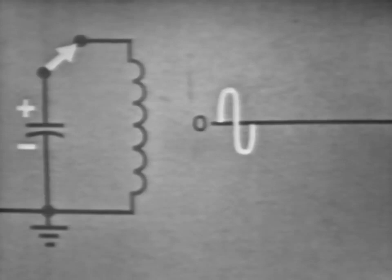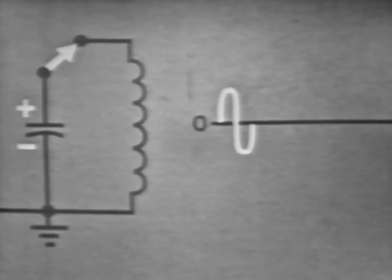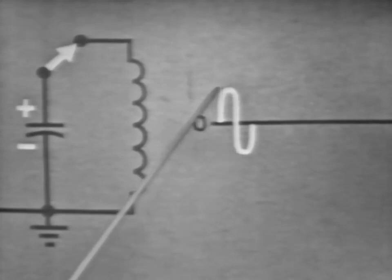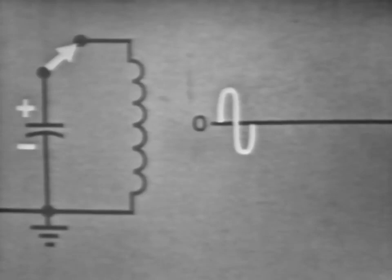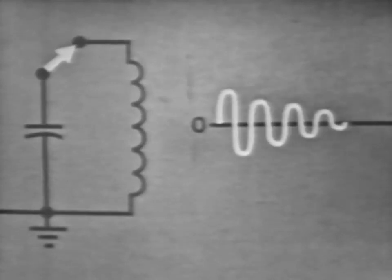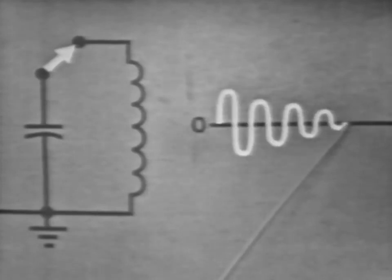Now, when the coil's field is completely collapsed, current is zero, and the capacitor is charged. Notice that the current on this alternation was not quite as great as the original alternation, due to the circuit resistance, which we have not shown in this simplified drawing. Thus, as this oscillating action continues, the output waveform will continually decrease until the energy in the circuit is completely absorbed.